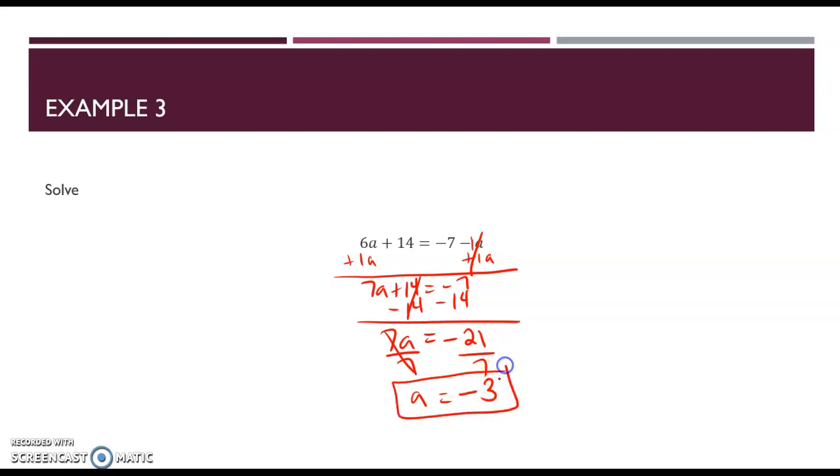And so A will equal negative divided by positive is negative. 21 divided by seven is three. And so we end up with the fact that A equals a negative three and we could plug that in and we're going to get the same thing on both sides of the equal sign so that we know that we are correct and that is solving multi-step equations with our variables on both sides of the equal sign.